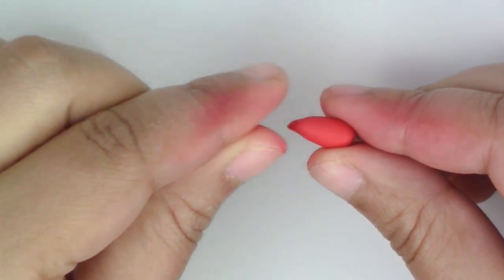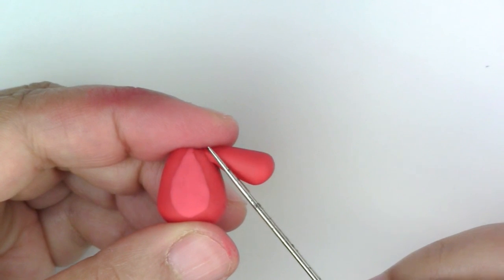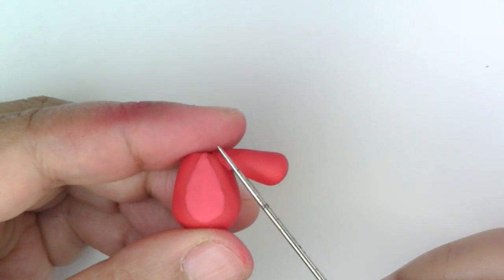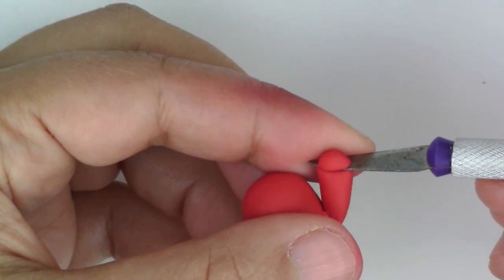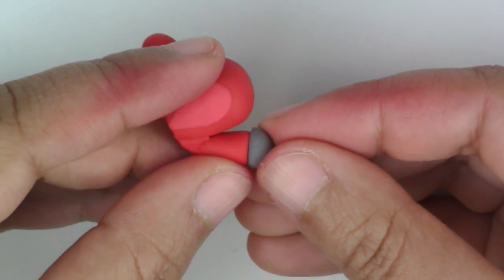For the arms, roll a long teardrop, flatten the top, and smooth it where the head would go. Remove part of the hand, and replace it with a piece of grey, and a tiny hook.